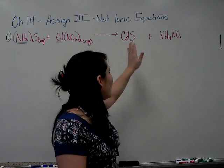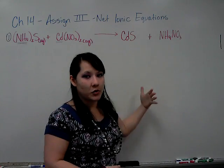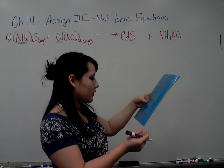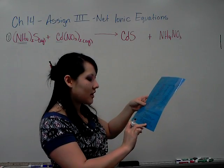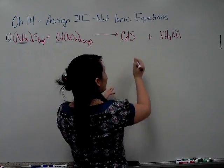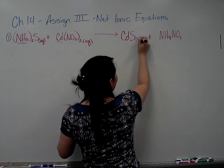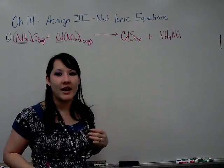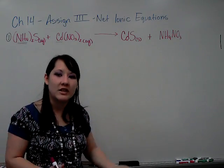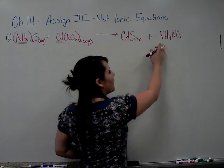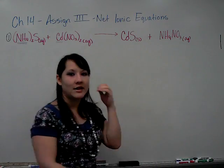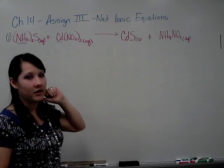Now that you've predicted what the products are, you have to identify the products as soluble or insoluble. Cadmium sulfide, according to the rules, sulfides are insoluble except with group 1, 2, and ammonium. So this cadmium sulfide is insoluble. And so I'm going to label it with an S for solid. It's insoluble. It cannot be dissolved. That means it will stay as a solid. Ammonium nitrate, on the other hand, is soluble, so I'm going to label it as aqueous because it will stay dissolved in the solution.